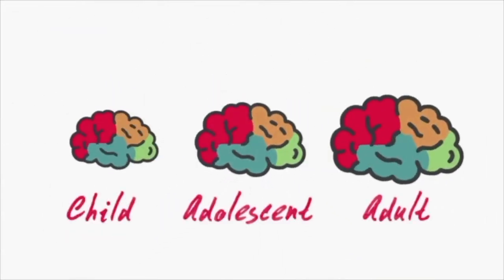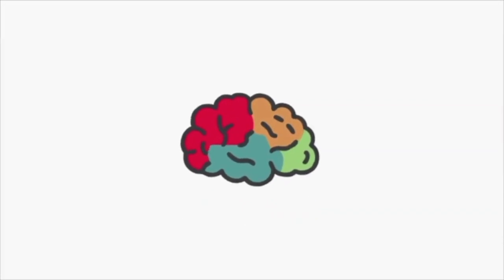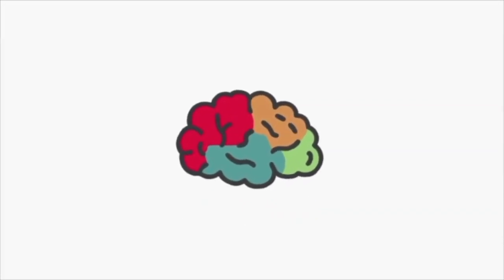Believe it or not, a two-year-old's brain is 80% the size of an adult's and by adolescence it's practically full size. But this doesn't mean it's finished developing. Lots of changes are going on beneath the surface.